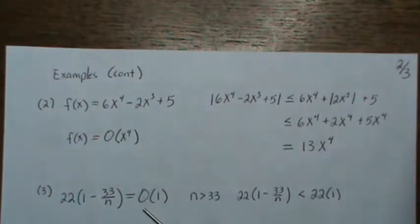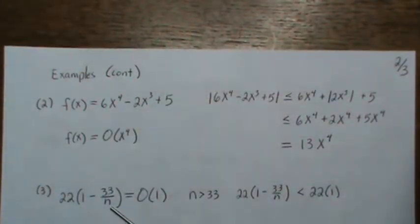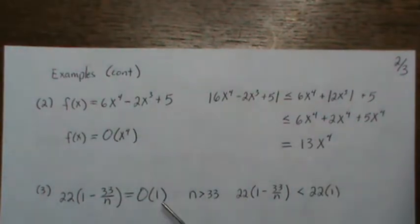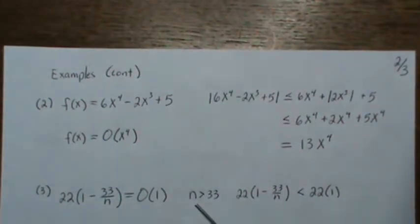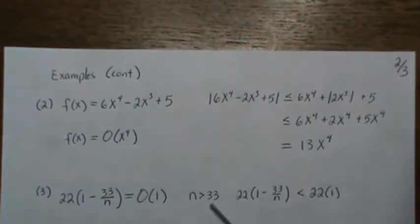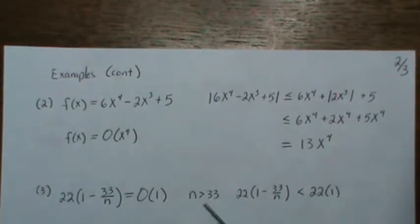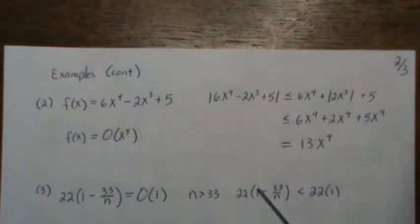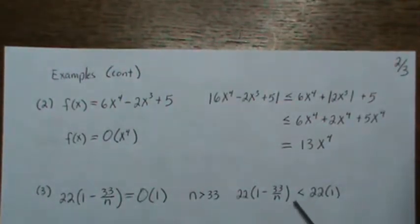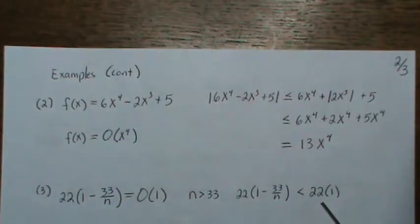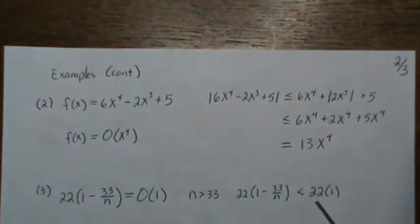Here's an interesting one: 22 times (1 − 33/n) is big O of 1. That says the constant 1 and this term behave similarly as n gets really big. Remember in the definition it says there exists an x₀ such that when x gets bigger — so the 33 here is kind of like x₀ — as n gets bigger than 33, the piece inside is less than 1. If we replace it by 1, then this term is smaller than that term, and we fulfill the definition of big O: our function is less than some value m, which is 22, times our function g(x), which is 1. So this is a true statement.